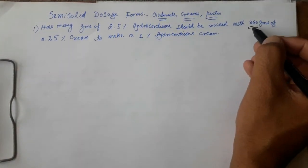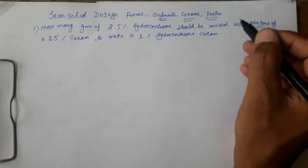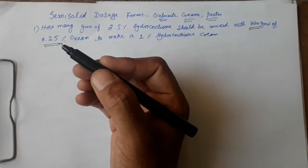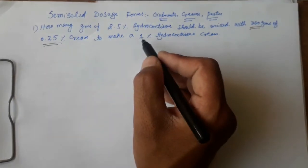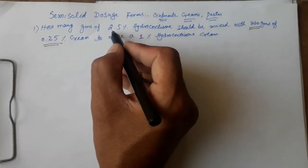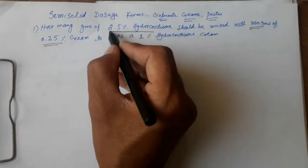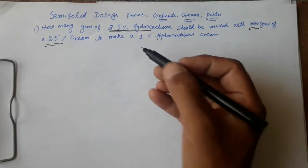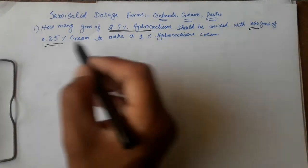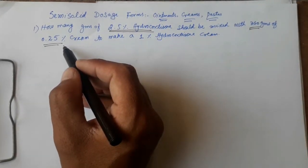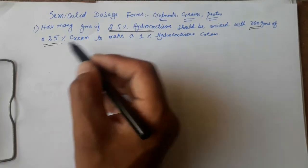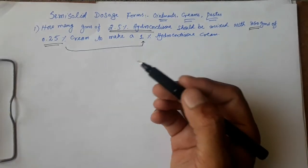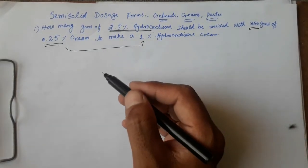We are given a cream which is 360 grams in weight and 0.25% in concentration. We have to add 2.5% hydrocortisone to make this 360 gram, 0.25% cream more concentrated — that is, the final concentration should be 1%.